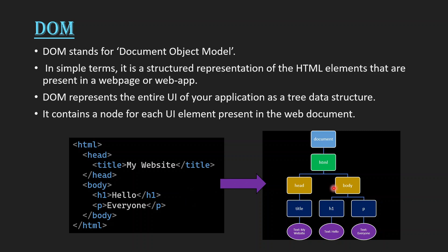So what the browser does is it creates one tree-like structure where each and every tag represents a node in the tree. Just like we have a body tag, we have one node body inside our Document Object Model. Inside the body we have h1 and p tags, similarly we have h1 and p nodes. The whole HTML file structure is represented differently in the DOM, but JavaScript can understand the DOM and with its help, JavaScript manipulates the DOM and our web page content changes as per our requirement.